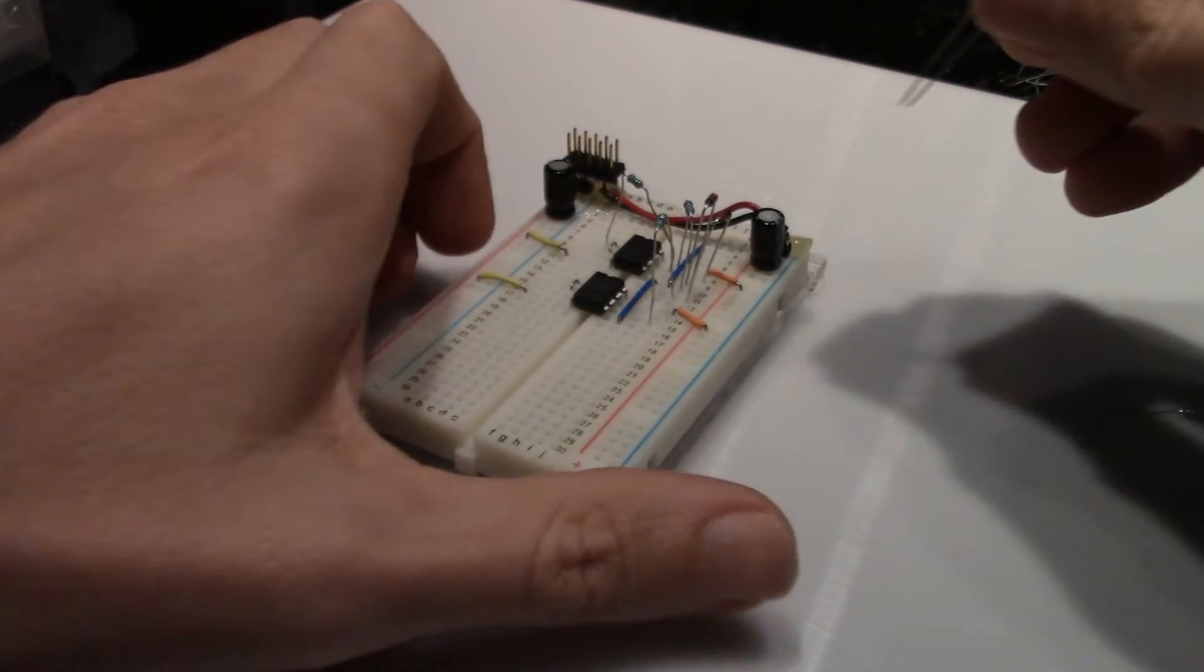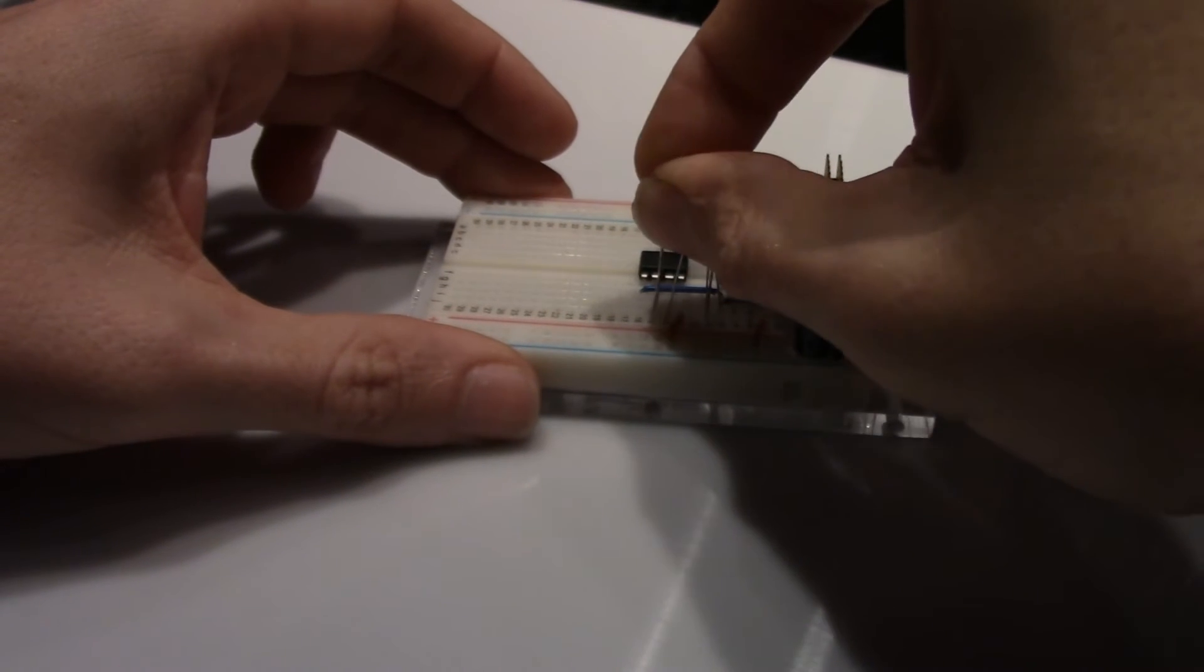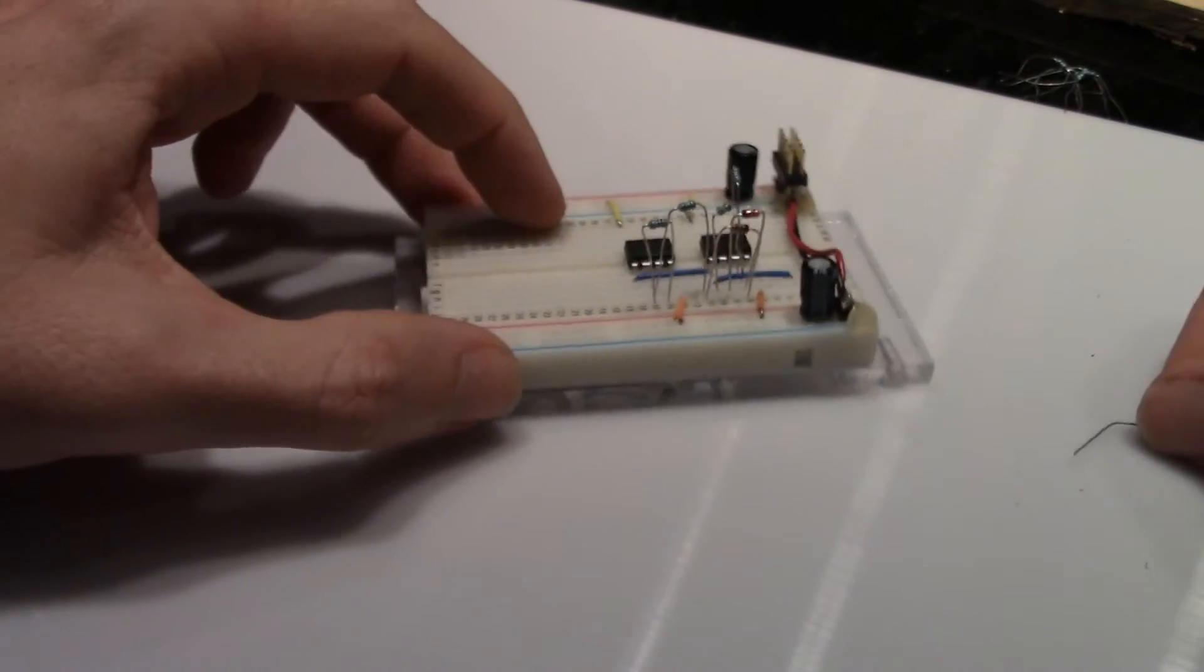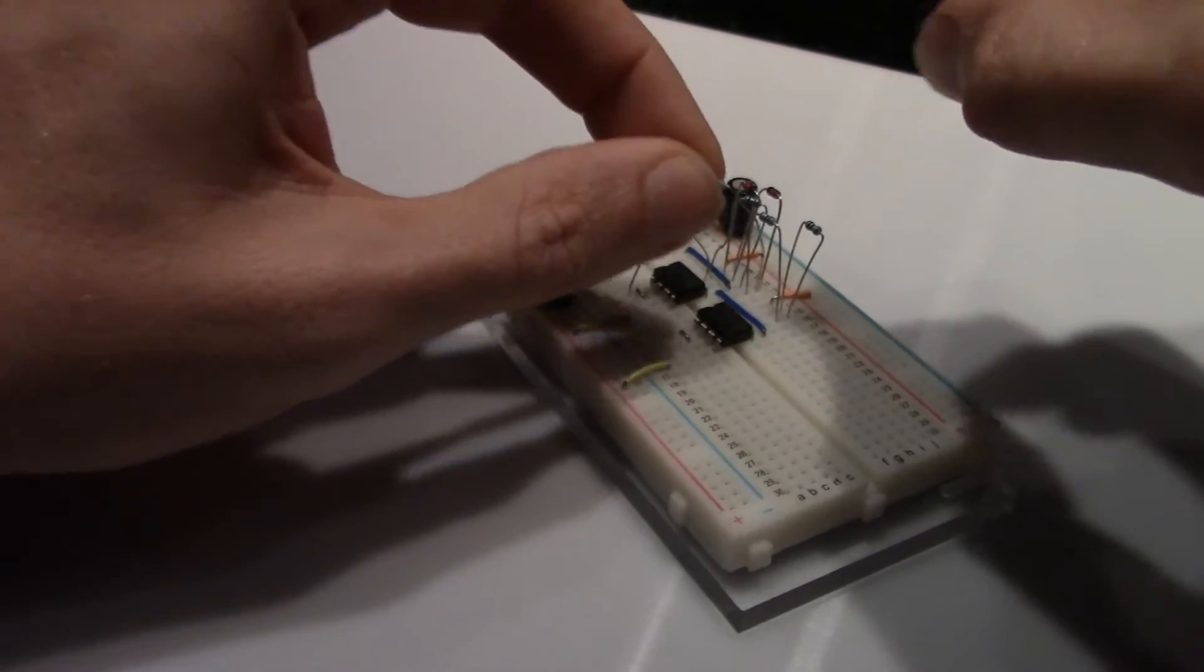Now two 20k ohm resistors. First from the output to the negative input on the second chip. Then from the output to the upper right op amp to the negative input.